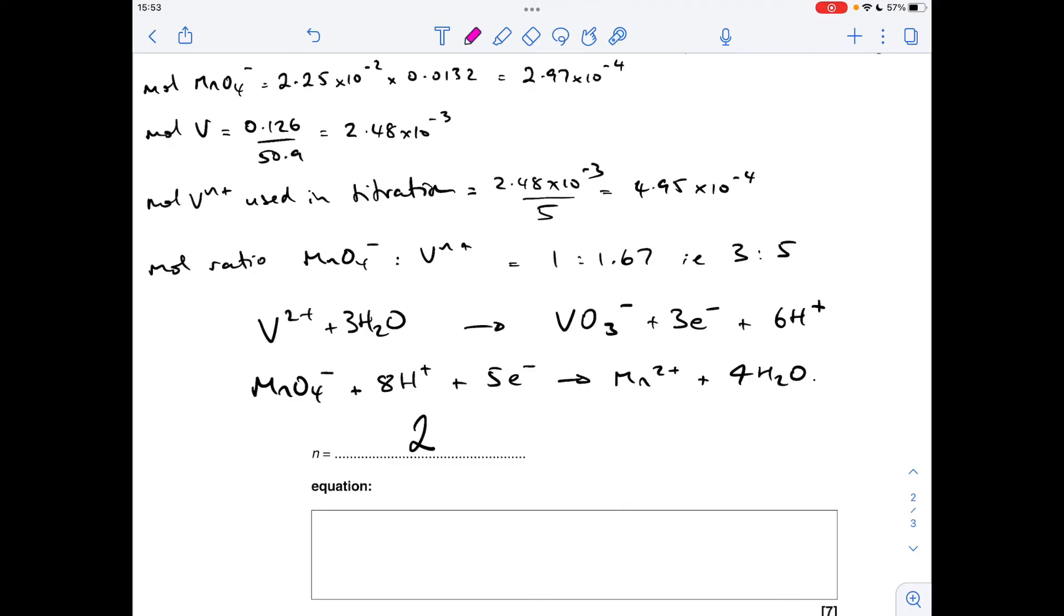So there are five moles of this, three moles of that one. So we're going to multiply the equations out now and then add them together. So that gives us this fantastic-looking equation here, which is literally just three times that one plus five times that one. I haven't bothered putting the electrons in because we know that we're going to have 15 on each side, so they're going to cancel.